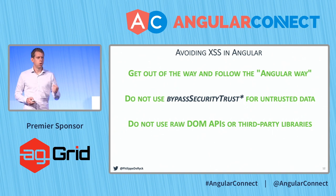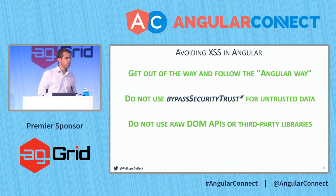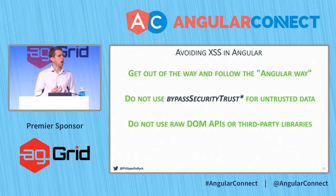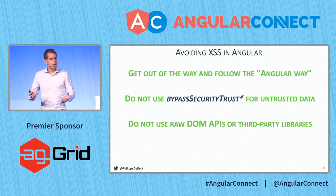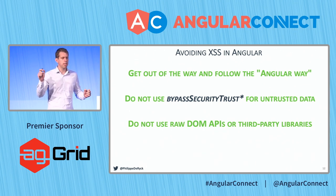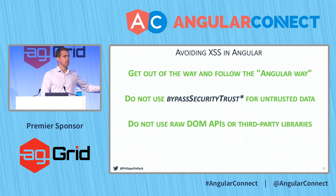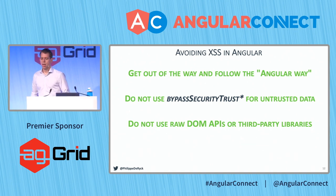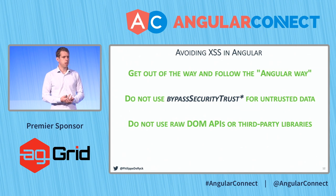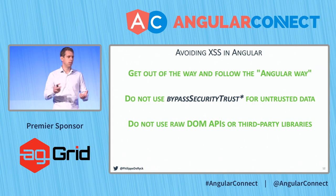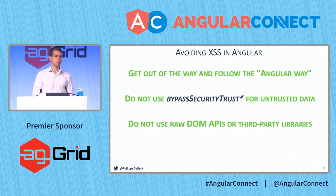The third guideline: don't use raw DOM APIs. There are ways to get access to raw DOM elements with ElementRefs — don't use these APIs to output data into the DOM. Don't set attributes or content with those values, because Angular is not in the loop anymore. The moment you get the raw DOM element and start calling APIs on that, Angular cannot protect you. Adding jQuery to your application is also a bad idea, because jQuery requires a lot of internal knowledge to prevent cross-site scripting vulnerabilities.